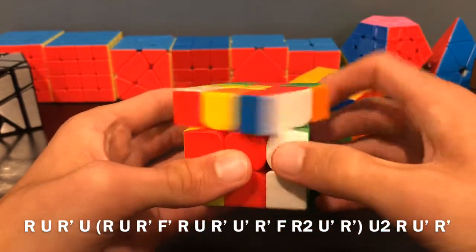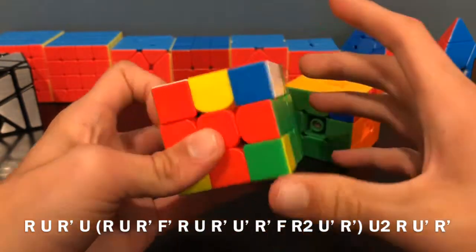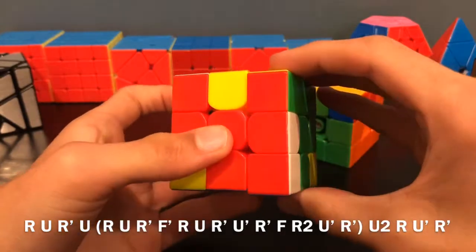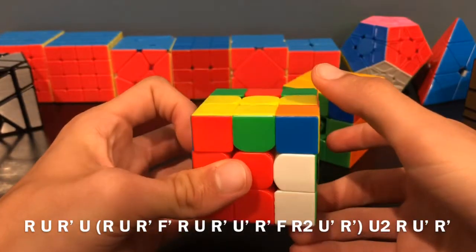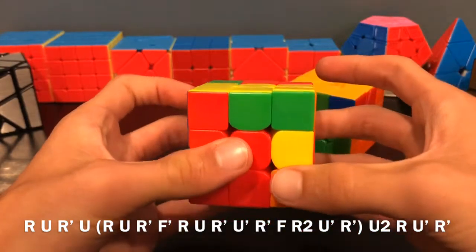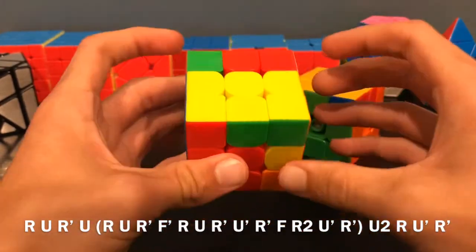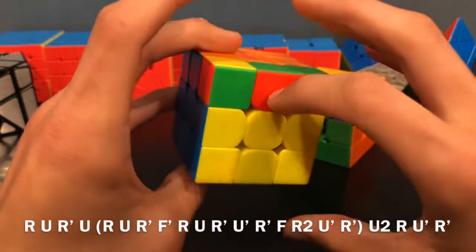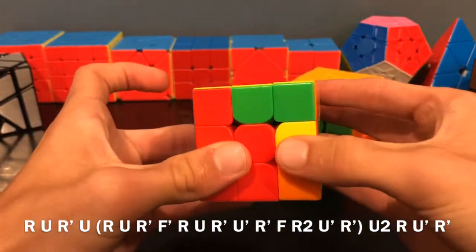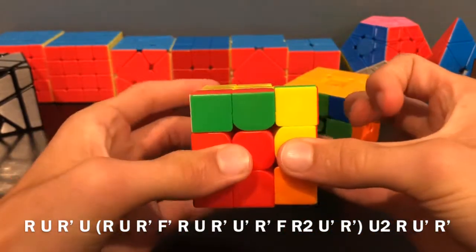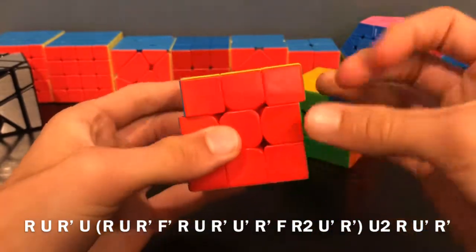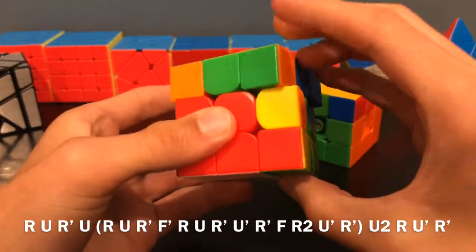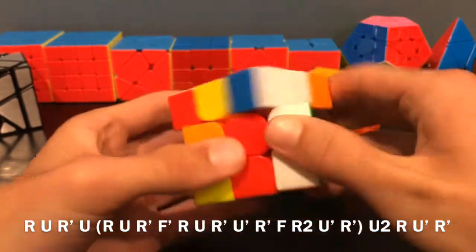That's the end of the Jb perm. Now to finish it off, we're just going to get this F2L pair back in, so U2 R U prime R prime. In review, it's a few setup moves, and then you do Jb perm, then just a move to get the F2L pair back in.